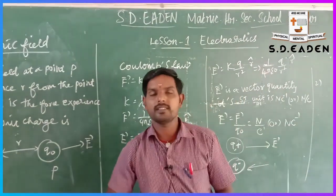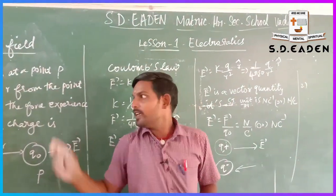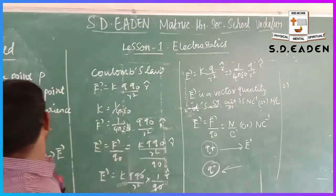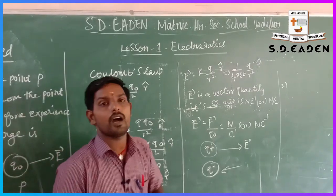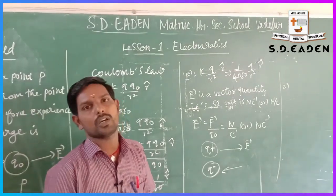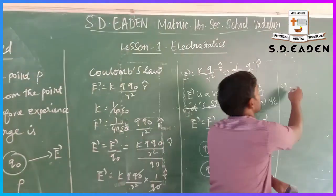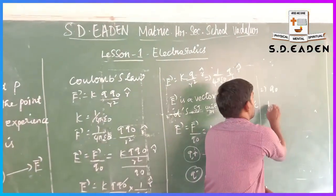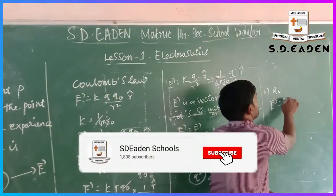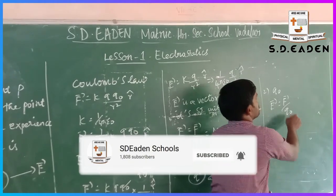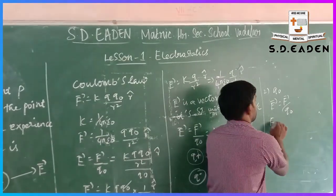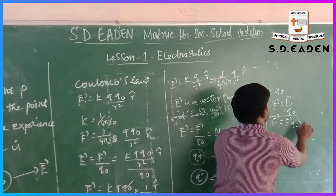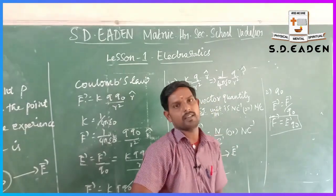The second aspect: from the definition of electric field, the electric field at a point at a distance r from the test charge q0 is represented by E vector = F vector / q0. Rearranging, the force F vector = E vector × q0. This is the second aspect.